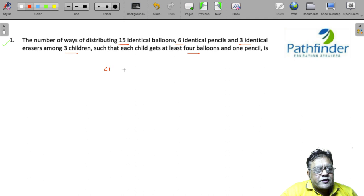So there are 3 children: C1, C2, and C3. There are 15 balloons in all. Each child gets 4 balloons each, and these are identical balloons.